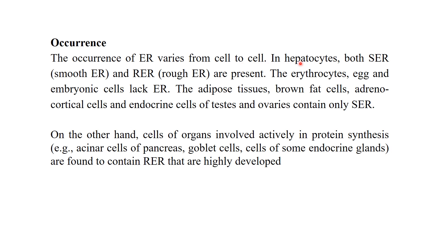The occurrence of endoplasmic reticulum varies from cell to cell. In hepatocytes (liver cells), both smooth and rough ER are present. In erythrocytes, eggs, and embryonic cells, ER is absent. Adipose tissue, brown fat cells, adrenocortical cells, and endocrine cells of the testes and ovaries contain predominantly smooth ER, related to hormone and steroid and cholesterol synthesis. Cells of organs actively involved in protein synthesis — such as acinar cells of the pancreas, goblet cells, and cells of some endocrine glands — contain highly developed rough ER, responsible for protein synthesis, packaging, and transport.